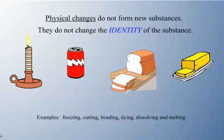Write down all these examples. Physical changes include: freezing, cutting, bending, dyeing — like Easter eggs. Dissolving things, like Jell-O powder in hot water or sugar in water, are physical changes. Melting is also a physical change. All these things are physical changes — just remember they don't change the identity of the substance. We're going to be talking about physical changes a lot more as the year progresses. Thanks for watching.